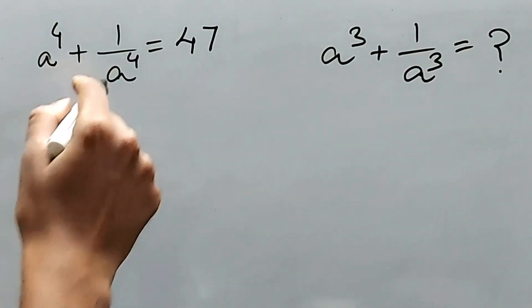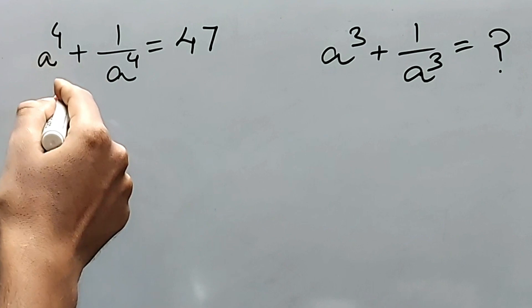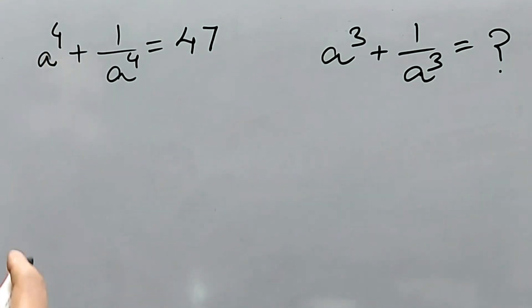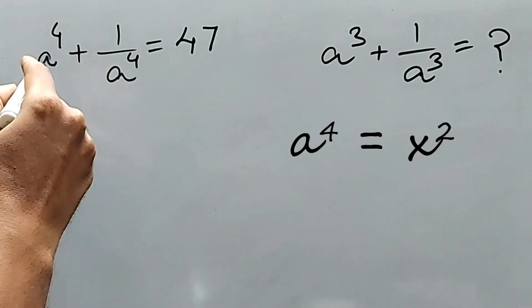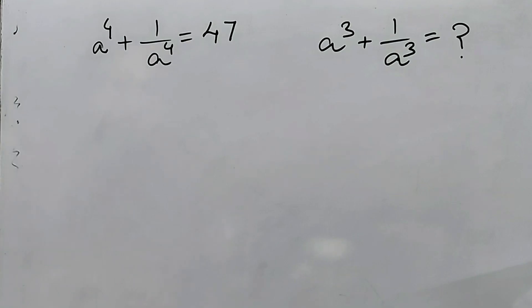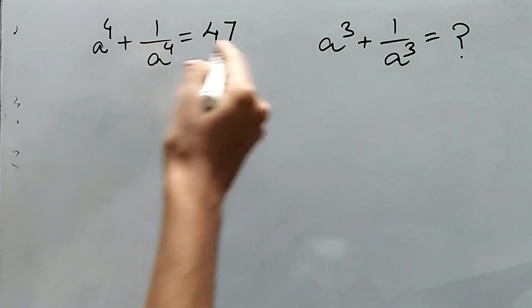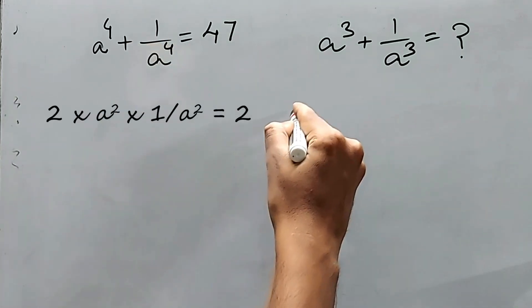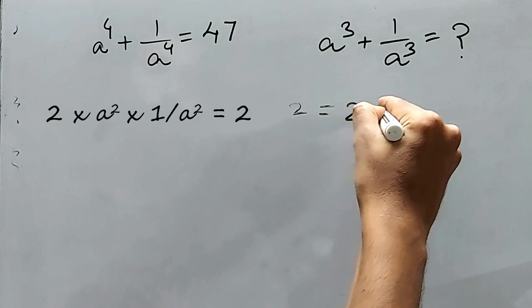Whenever we see this type of thing, we just have to get the whole square. Say like a^4 = x^2 and 1/a^4 = y^2. So just add 2 on both sides, because 2 = 2 * a^2 * 1/a^2.